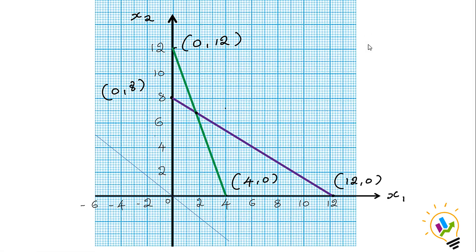This is a graph paper where I have x1 on the x-axis and x2 on the y-axis. I have plotted the two constraint lines on the graph. This constraint line has (0,12) and (4,0). This one has (0,8) and (12,0).